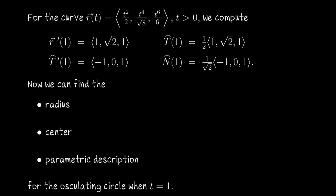In this video I would like to revisit a parametric curve that I've already computed some information about in a previous video. I've linked to it in the description. For the parametric curve R defined as t squared over 2, t to the fourth over square root of 8, t to the sixth over 6, we have the following computations.